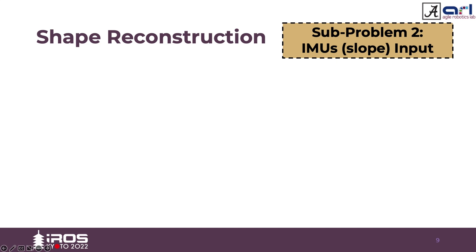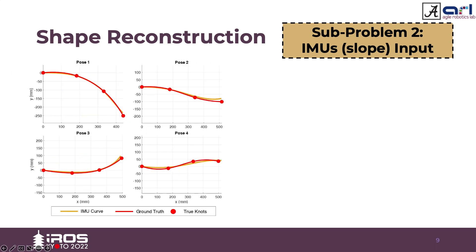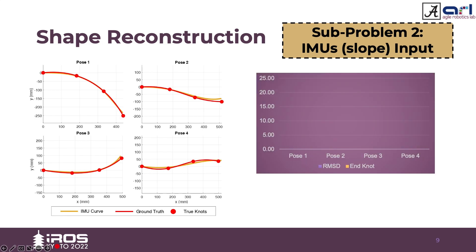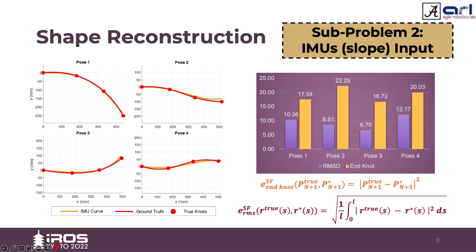For shape reconstruction using IMUs, the model is also tested for sensor noise, showing robustness results for plus or minus 2.5 degree random noise. Using slopes from the IMUs, the estimated shapes are shown for all poses. For root mean square error, the maximum is at pose 4 at about 12 mm, and for Hausdorff distance it is at pose 2 at about 22 mm. These errors may be due to noise from the IMU sensors.